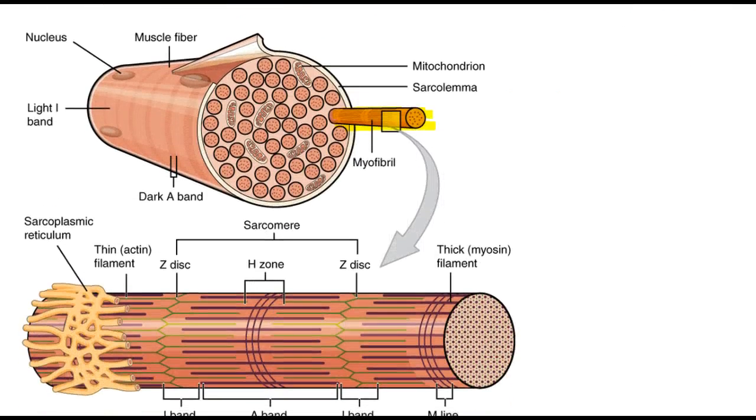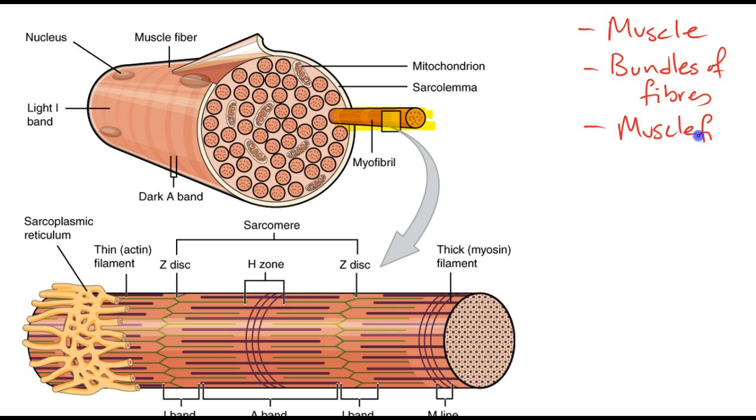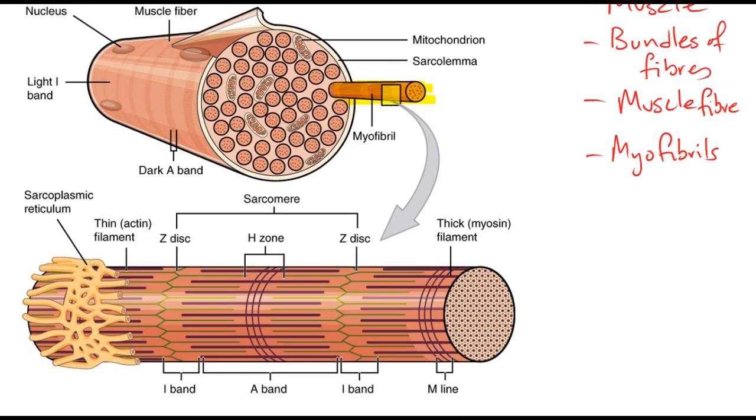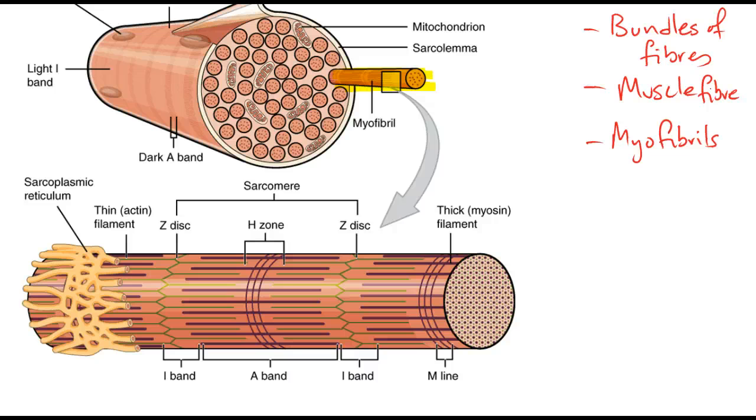Moving down a little bit. We started off with an entire muscle. We moved into bundles of fibers. Then our muscle fiber. And now we're breaking these muscle fibers down into myofibrils. And within these myofibrils we have many, many, many sarcomeres lined up next to each other to form that myofibril.